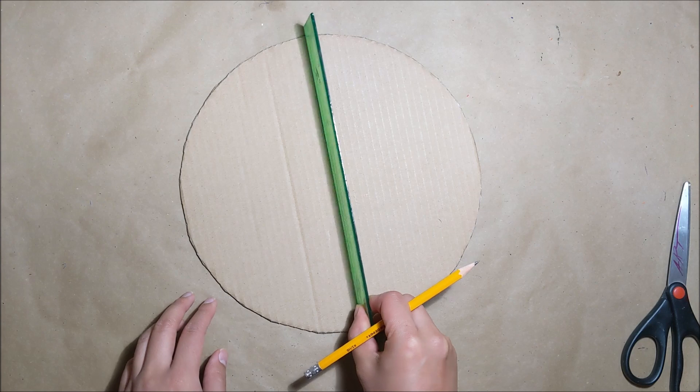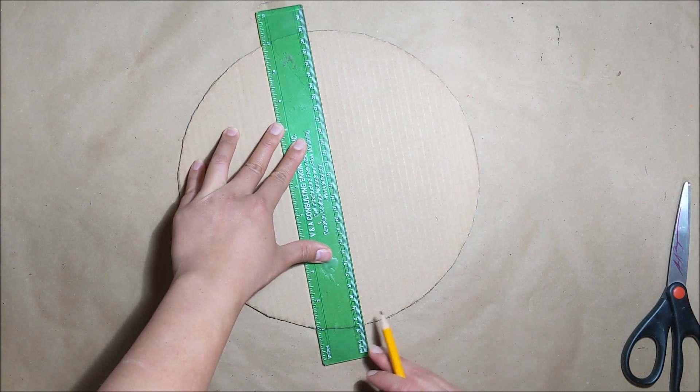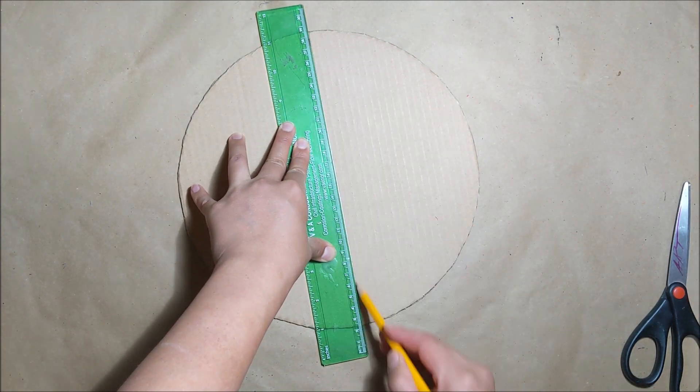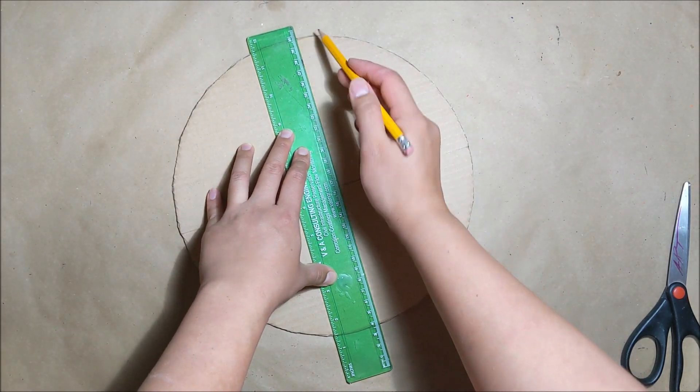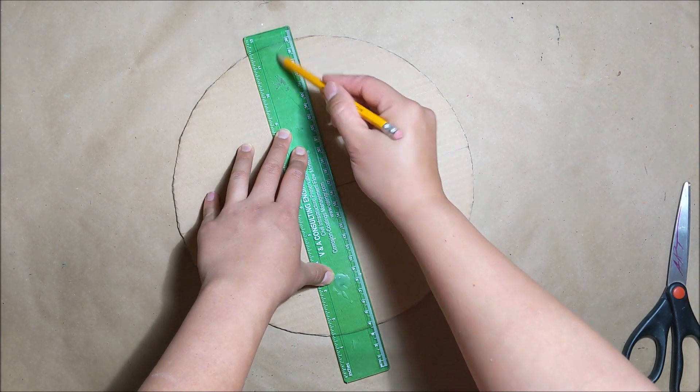Taking your ruler you're going to divide this pizza crust in half. I'm just eyeballing it. Try your best to find that midpoint and it doesn't have to be perfect. Now rotate your pizza. We are going to draw another line to create four pieces.